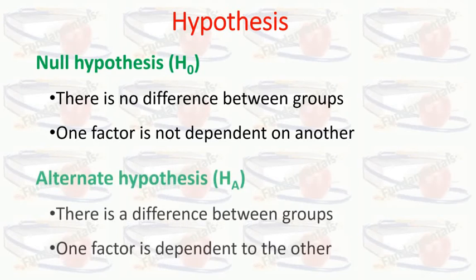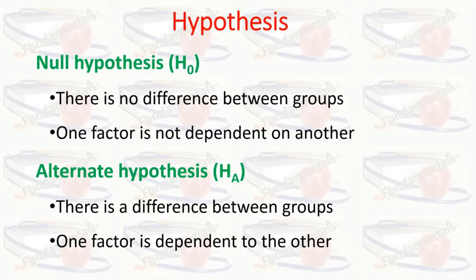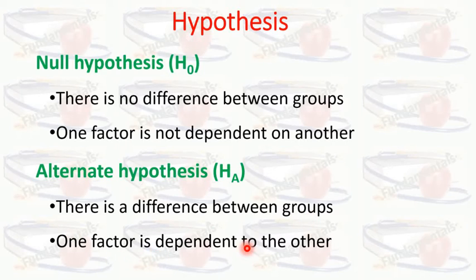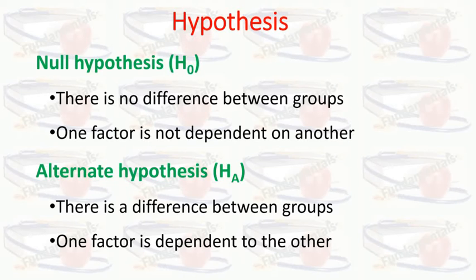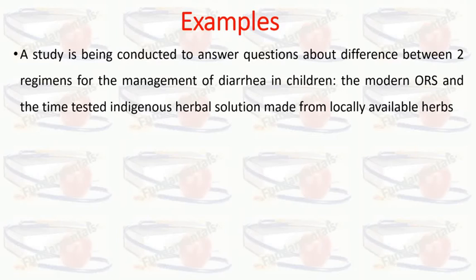The alternate hypothesis is the opposite of the null hypothesis. If in the null hypothesis we say there is no difference between the groups, then in the alternate hypothesis we state that there is a difference between groups and that one factor is dependent on another factor. In the null hypothesis we are nullifying the difference, while in the alternate hypothesis we are stating that a difference exists.